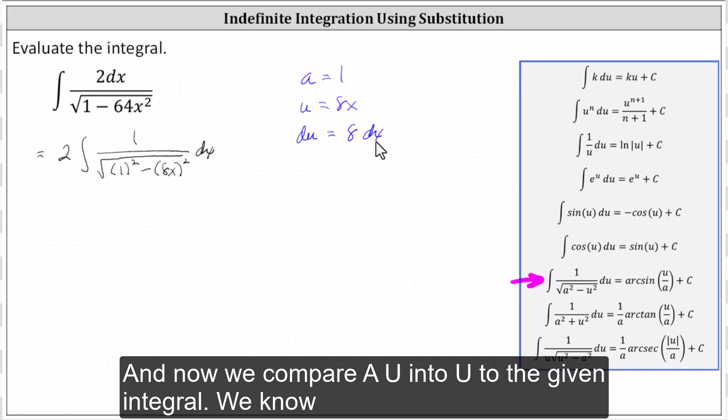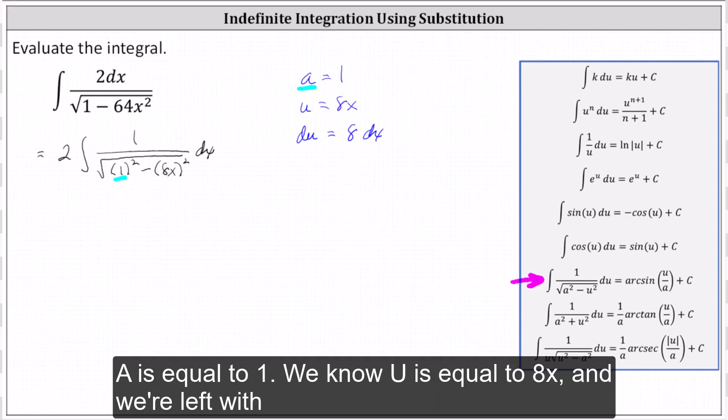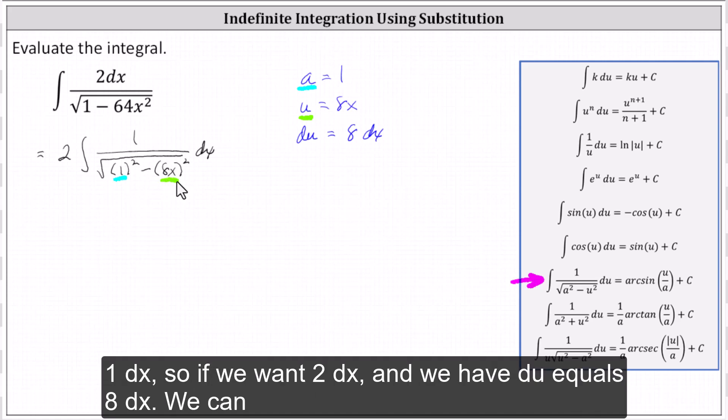And now we compare a, u, and du to the given integral. We know a is equal to 1, we know u is equal to 8x, and we're left with 1 dx. If we want 2 dx, and we have du equals 8 dx,